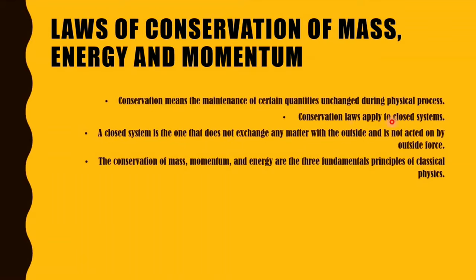Conservation laws apply to closed systems. In closed systems, these conservation laws get applied. A closed system is one that does not exchange any matter with the outside and is not acted on by outside force — meaning it is not affected by outside processes or forces.